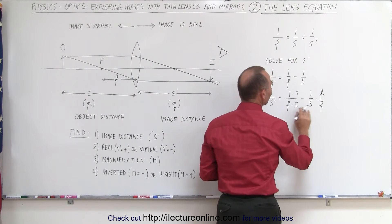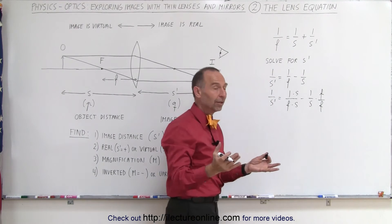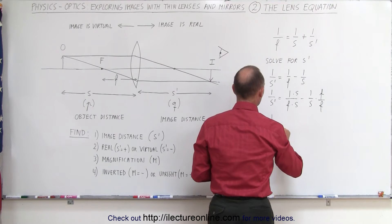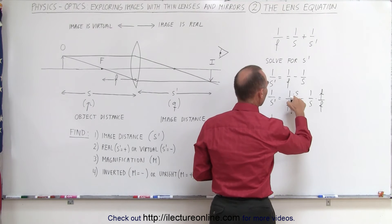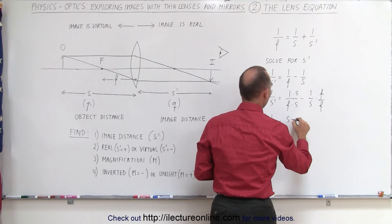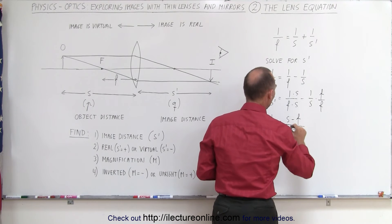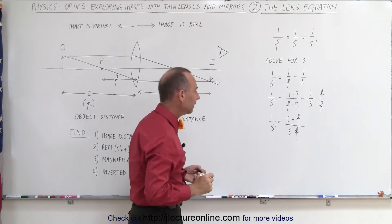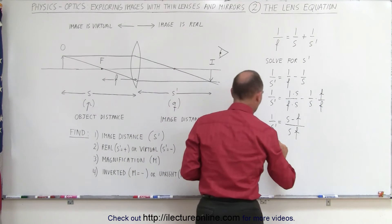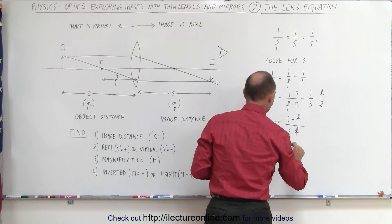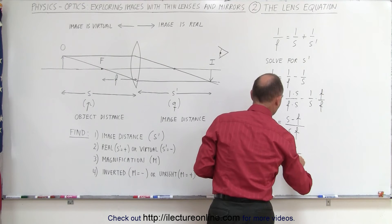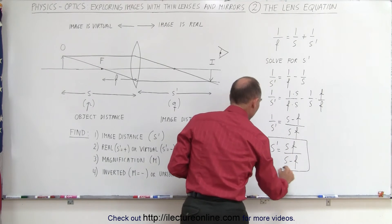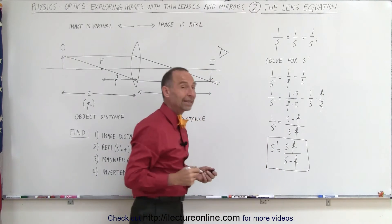Notice now we have the same denominator. That means we can subtract one from the other. So now we get 1 over S prime is equal to, here we get S minus F divided by the product of S times F. And then we can take the inverse of that and we write S prime is equal to S F divided by S minus F. And this form of the equation makes it a lot easier to find S prime.